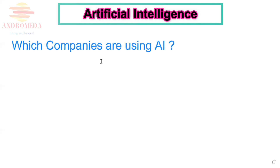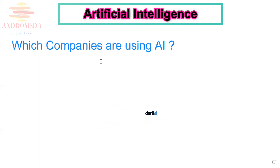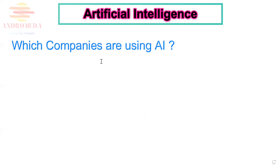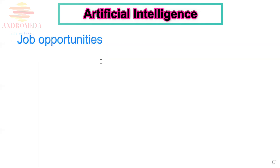Which companies are currently using AI? The top companies making use of AI and recruiting for it include Amazon, Apple, Google, Facebook, DeepMind, Clarifai, and others. These are some of the renowned companies currently using AI in their systems as well as recruiting for the same.